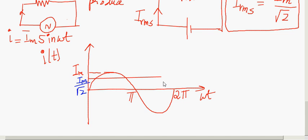To illustrate further: take two identical resistors R. Connect one to a DC source (battery) and the other to a sinusoidal voltage source. Use two wattmeters to measure the heat produced or power dissipated. The heat produced will be the same if you make the DC current equal to Im/√2, which is the RMS value. So the RMS value is actually measured in terms of the heat produced.